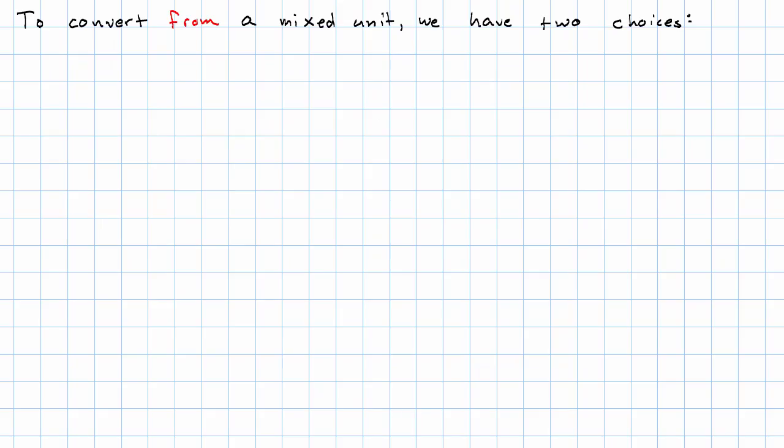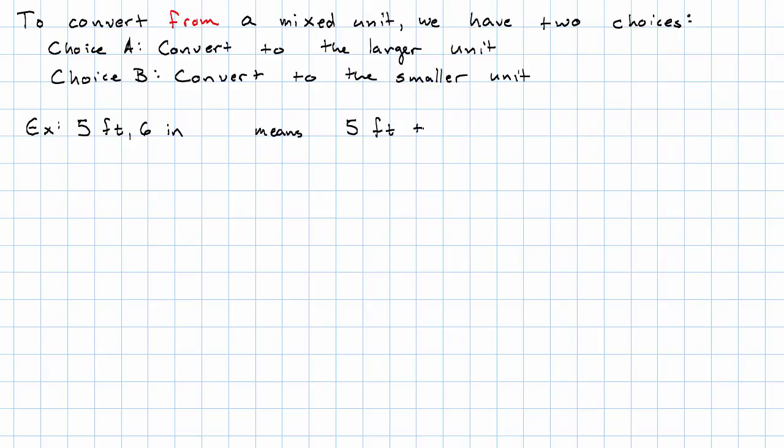When we're converting from a mixed unit, we have two choices. We can either convert everything to the larger unit or convert everything to the smaller unit. So let's consider an example we saw above. 5 feet 6 inches. Remember that just like a mixed number, a mixed unit represents addition. So this means 5 feet plus 6 inches.